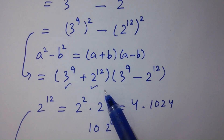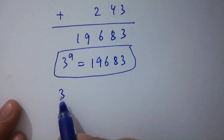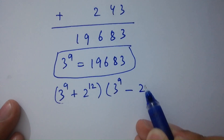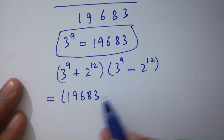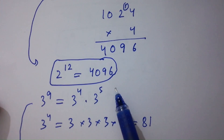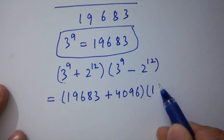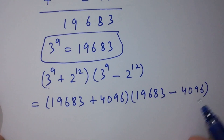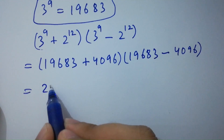Recall we have (3 to the power 9 plus 2 to the power 12)(3 to the power 9 minus 2 to the power 12). With 3 to the power 9 equal to 19,683 and 2 to the power 12 equal to 4096: 19,683 plus 4096 equals 23,779.